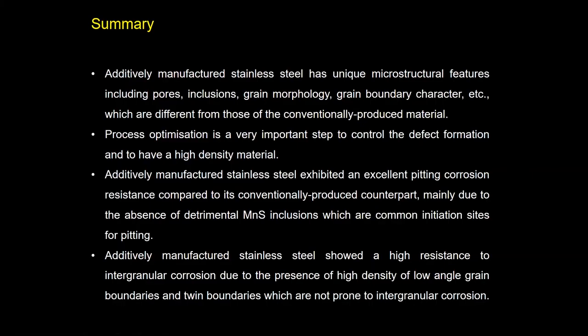In summary, we see that the additively manufactured sample has a complex microstructure, including grain morphology, grain boundary character, and inclusions, which all influence the corrosion behavior in different ways. The material has high resistance to pitting corrosion and to intergranular corrosion, which shows that additive manufacturing has the potential to replace conventional manufacturing in industries requiring high resistance to corrosion. However, there are still too many kinds of corrosion that have not been investigated yet, which necessitates more research in future works.